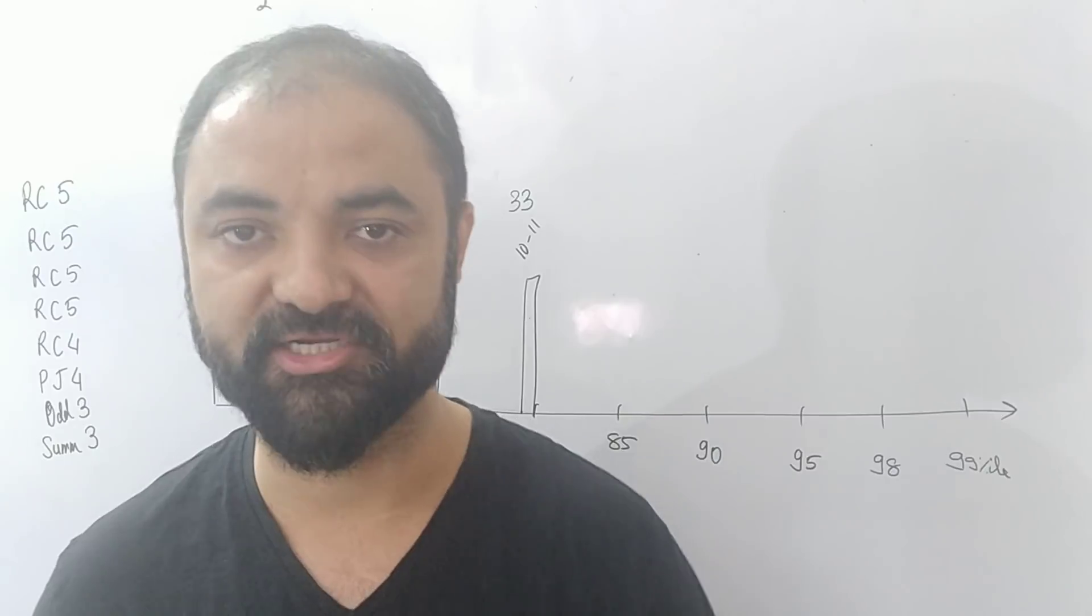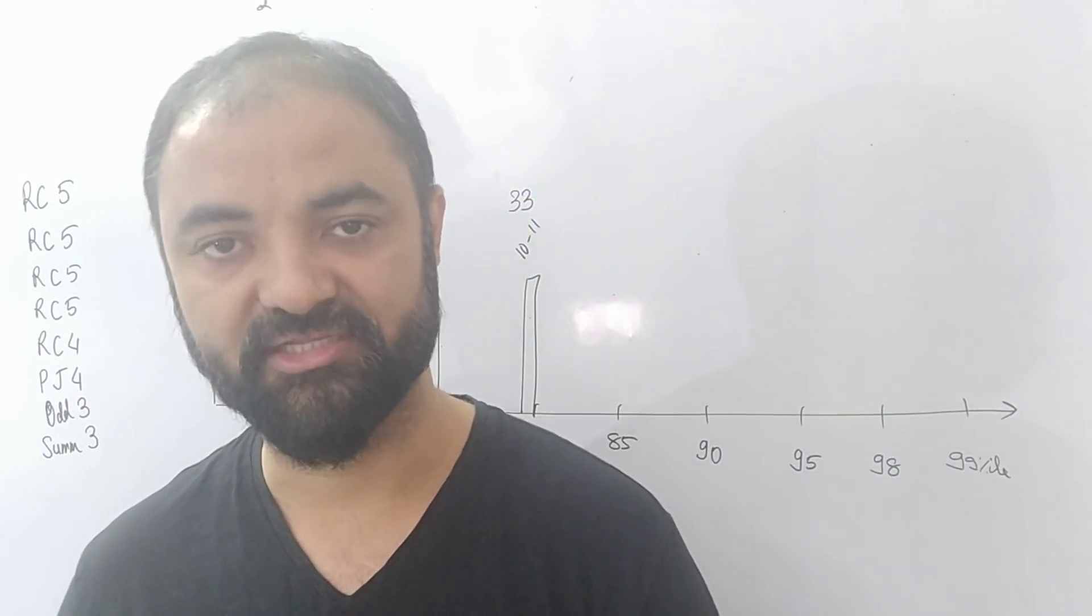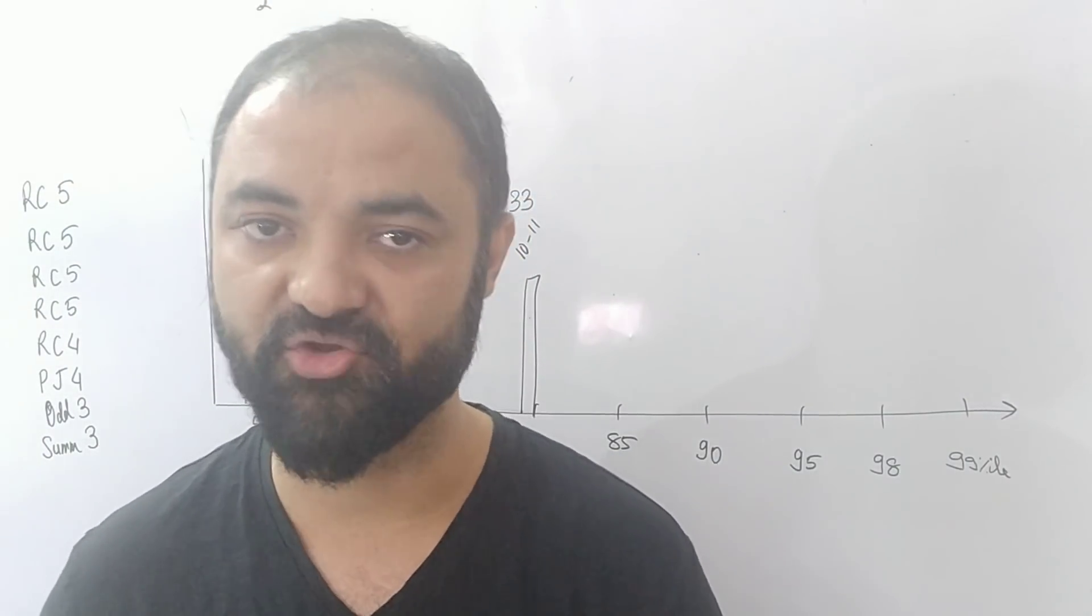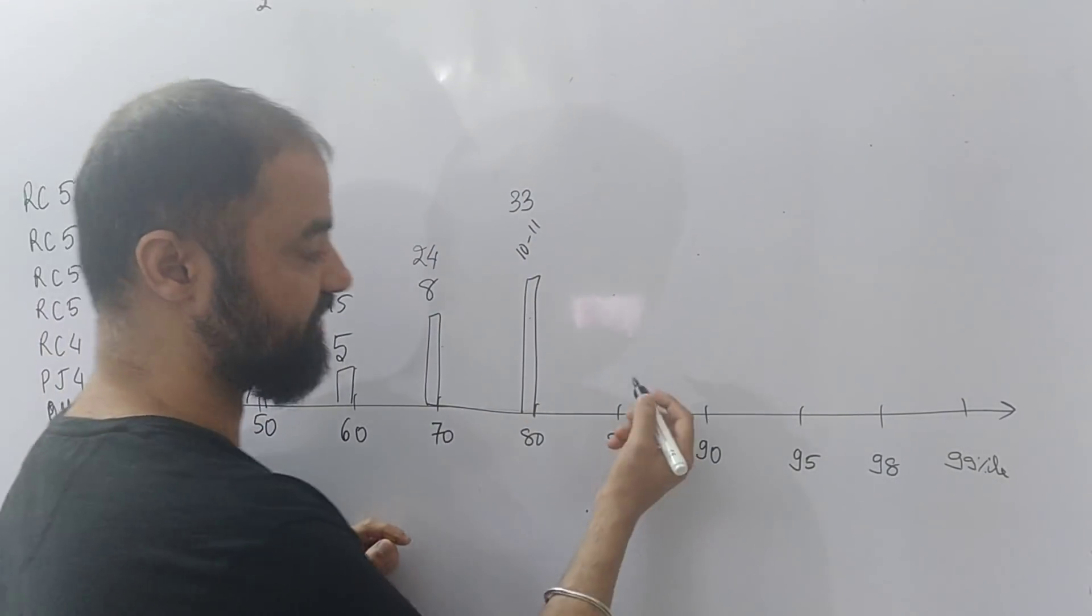So now I am assuming you are equally performing in the other areas. So above 80, new IIMs' calls will start. So you have to do 11 questions correct, 33 marks, 30 to 33 marks to get a new IIM call.